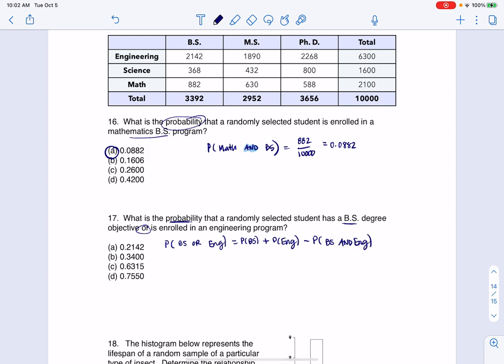So let's go figure these numbers out. For bachelor's, I'm in this column. So I need 3,392 out of the 10,000.